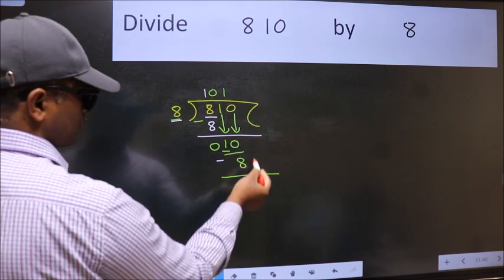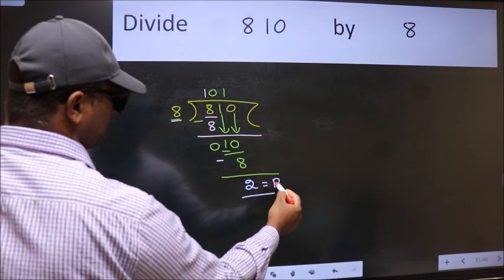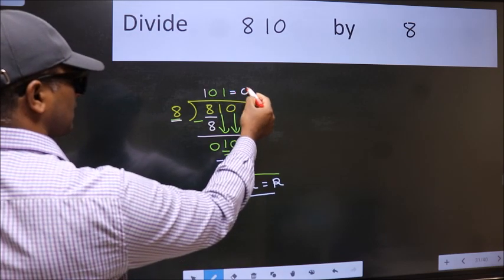No more numbers to bring down. So we stop here. This is our remainder and this is our quotient.